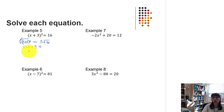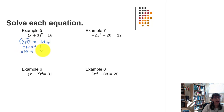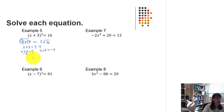Now we set up two separate equations to solve, and we should end up with two answers. First we have x plus 3 equal to positive 4, then x plus 3 equal to negative 4. Using the properties of equality, I subtract 3 from each side of the first equation to get x equals 1.